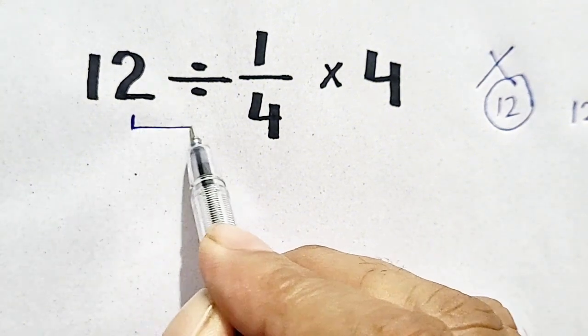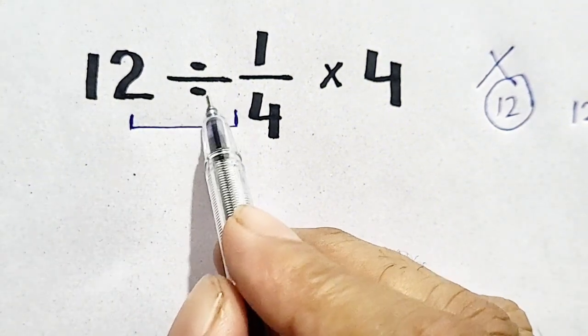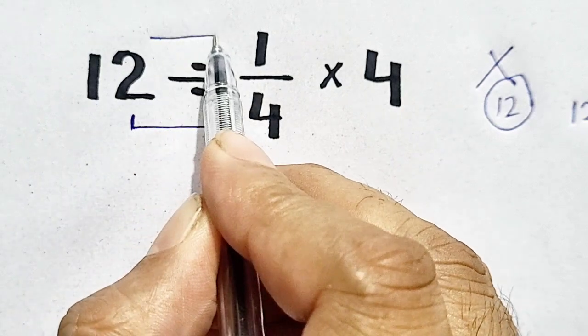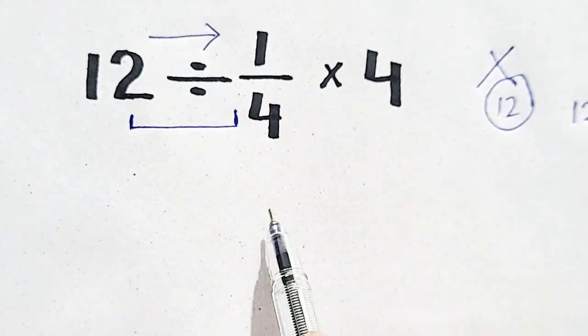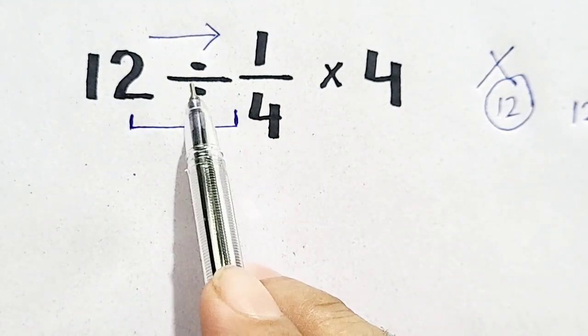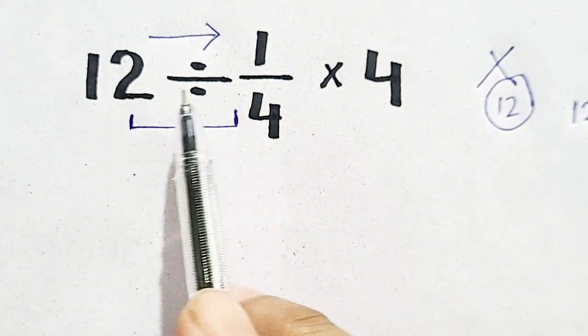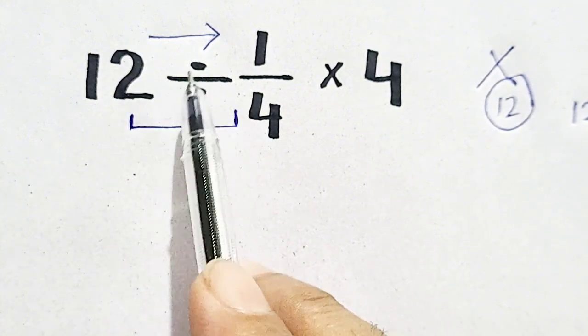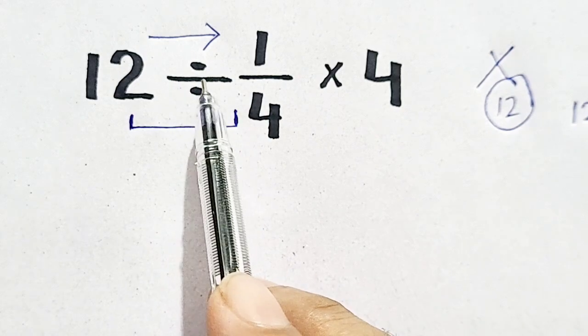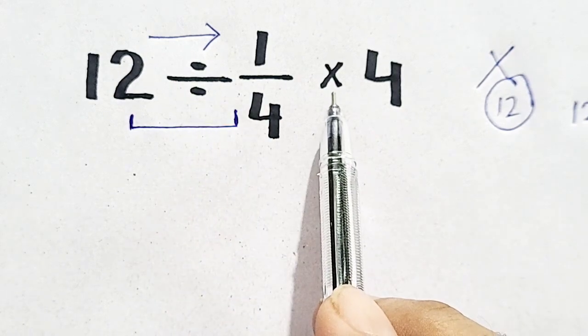We have to solve division first because we have to move from left to right. According to PEMDAS, we move from left to right. At left there is division, so we have to perform division first and finally multiplication.